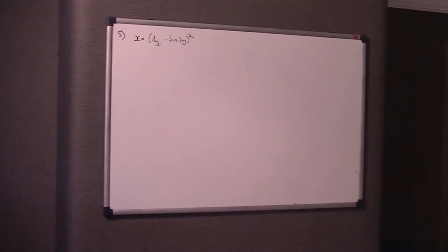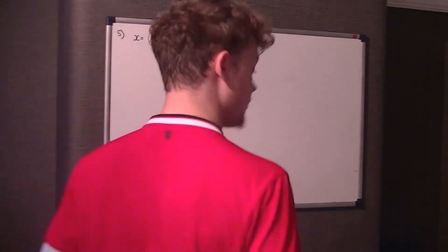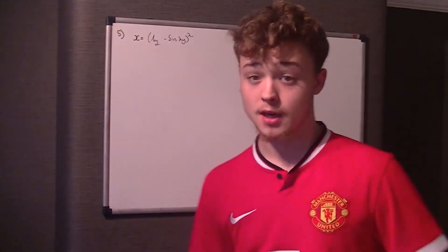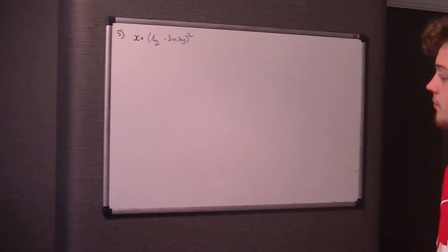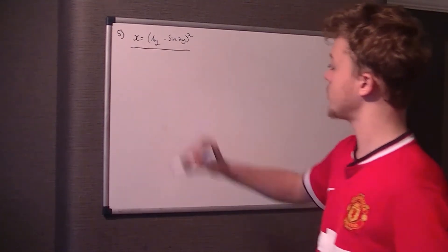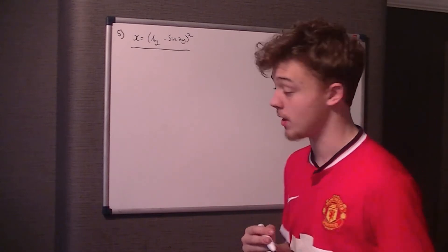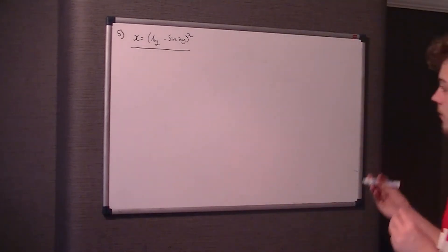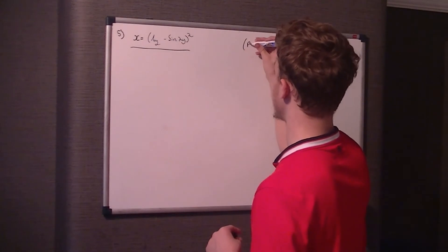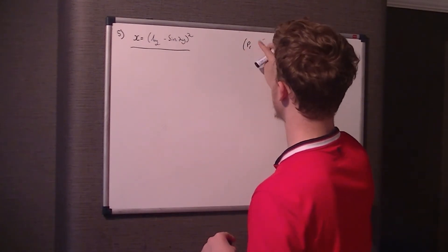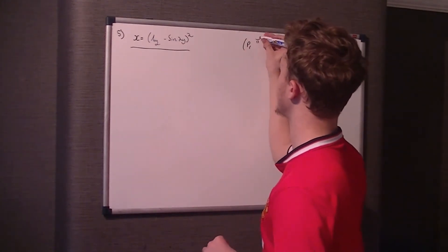Hello, welcome. This is now question 5 for an Edexcel C3 June 2015 paper. This question gives us this formula here. We're told x equals 4y take sine 2y all squared. And we're given a position where it's p and then the y coordinate is pi by 2 or pi divided by 2.